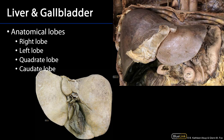Turning our attention to the liver in particular, this anterior view shows us the right lobe of the liver, which is the most dominant, and the left lobe of the liver. Along here is the round ligament of the liver — the ligamentum teres hepatis. In association with the round ligament, we have the falciform ligament from the previous session. The falciform ligament and the round ligament are very closely allied with one another.